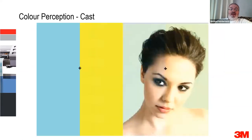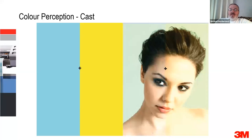Another concept is called cast. If you look at an image, your brain will eventually sort out and subtract cyan from the left and yellow from the right. That image has a slightly cyan hue on the left side and a slightly yellow hue on the right. By looking at one side and then flicking your eyes to the other, you'll see that she changes slightly. Your brain is subtracting out those colors. Cast and color perception can have a big effect on how you actually see a color.